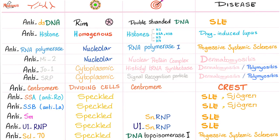Anti-double-stranded DNA: pattern is rim; it targets the double-stranded DNA; associated disease is lupus. Anti-histone: pattern is homogenous; targets histones H1, H2A, H2B, H3, and H4. Associated disease is drug-induced lupus.